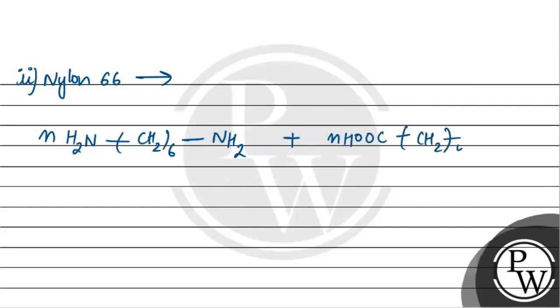For labeling, this is hexamethylene because there are 6 methylene groups and 2 amine groups. This is adipic acid. By heating these, the polymer that forms is Nylon-66, and its repeating unit looks something like this: a simple bracket structure.